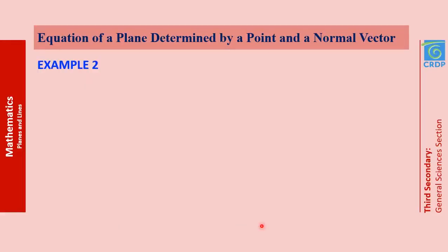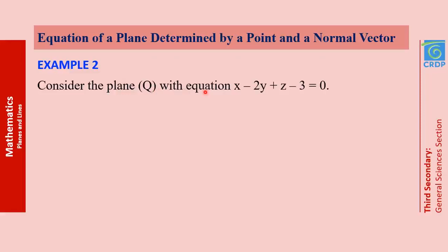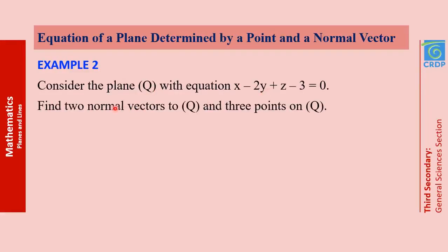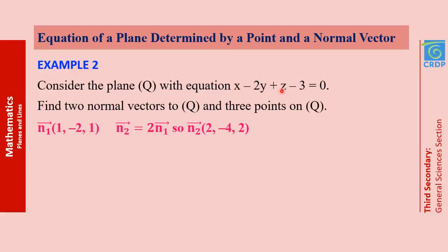Let's take another example. We have a plane Q with a given equation, and we need to find two normal vectors to Q and three points on Q. The first normal vector is very easy — it's (1, −2, 1), taken directly from the general equation of the plane. Another normal vector would be any vector collinear to n1. To get a collinear vector, we multiply by any non-zero real number; choosing n2 as double n1 gives components (2, −4, 2).